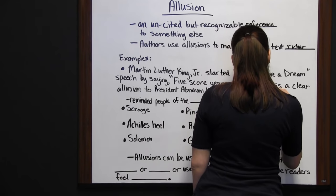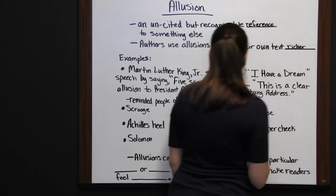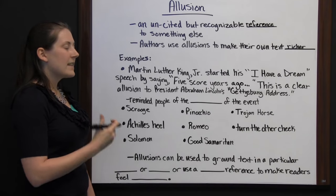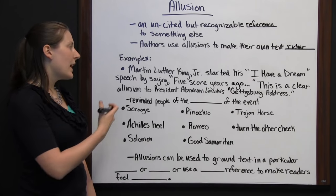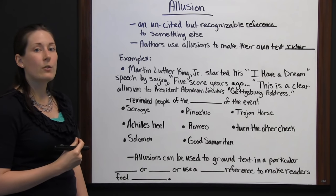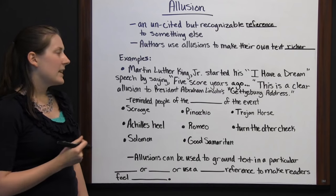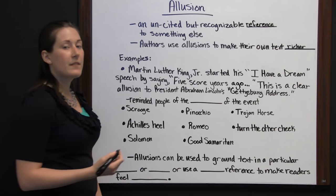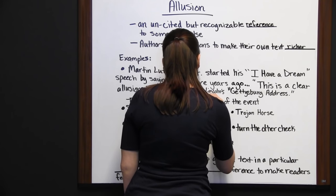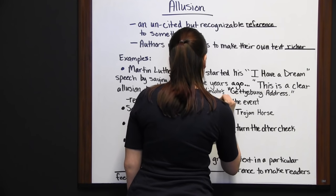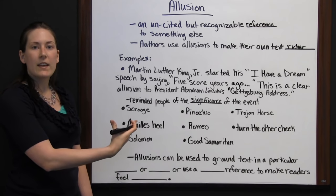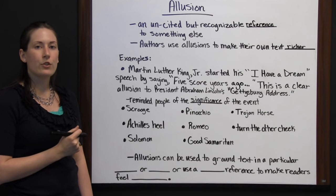Lincoln started with 'four score and seven years ago.' Even though Martin Luther King Jr. wasn't saying the exact same thing, starting with 'five score years ago' was similar enough that people knew he was alluding to President Lincoln's speech. This reminded people of the significance of the Gettysburg Address, and in doing so, lent significance to the speech that Martin Luther King was making.